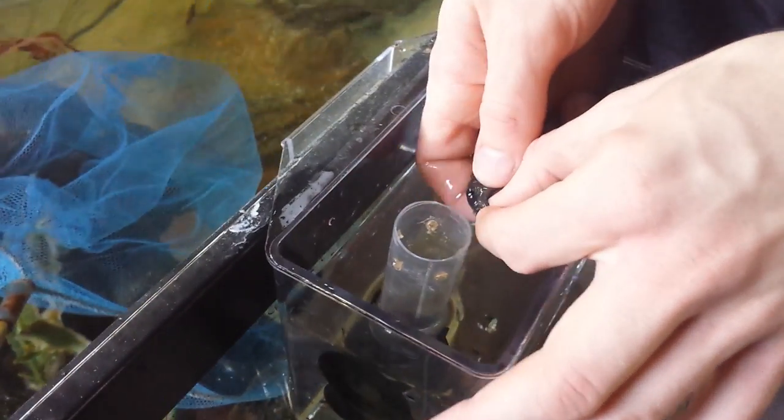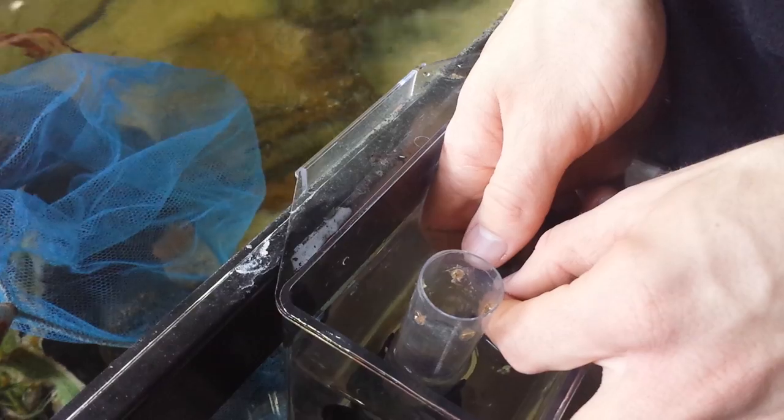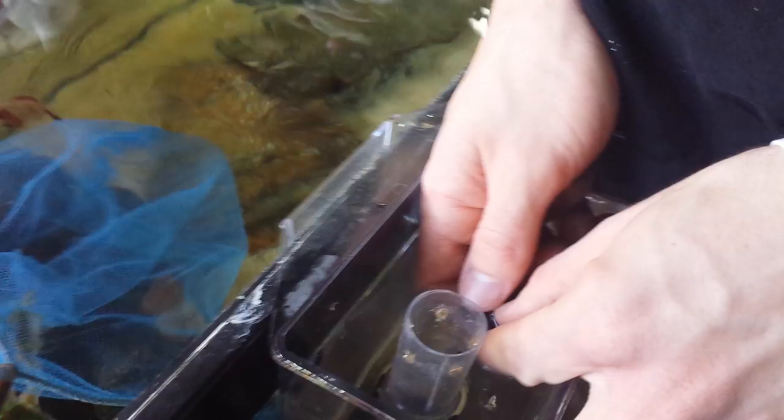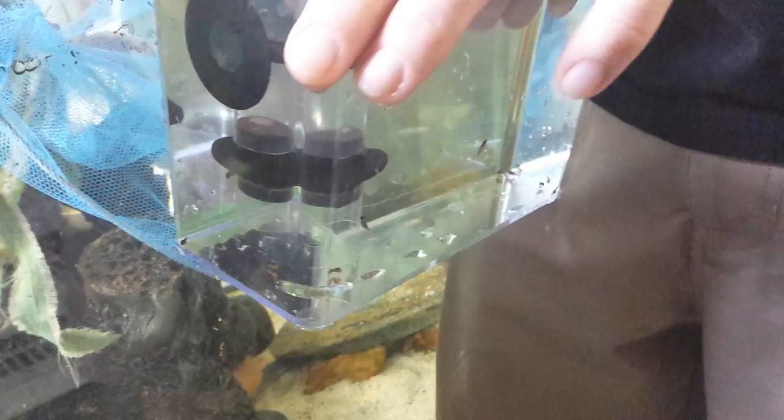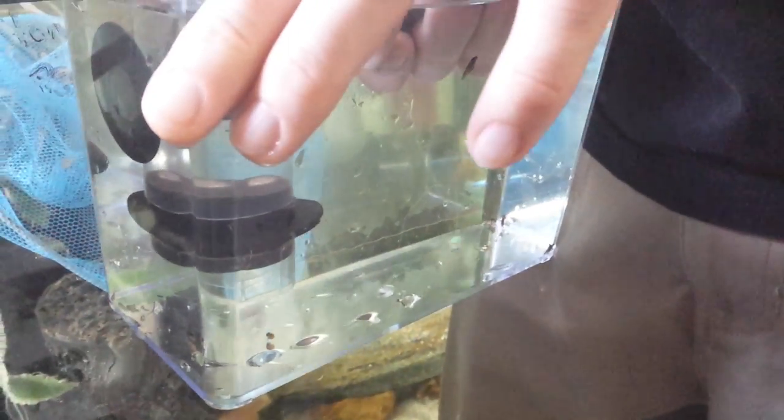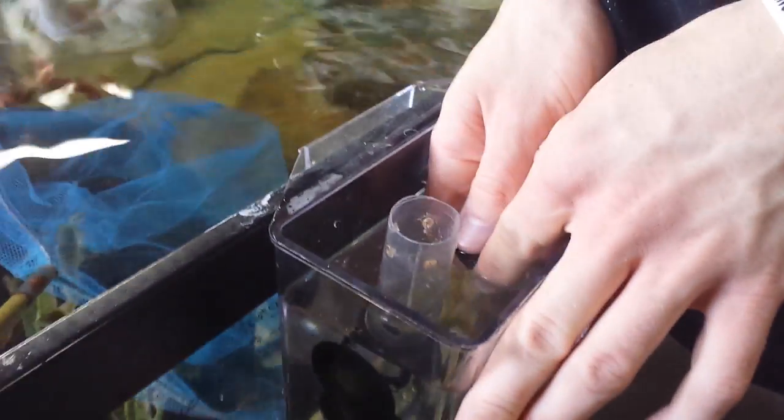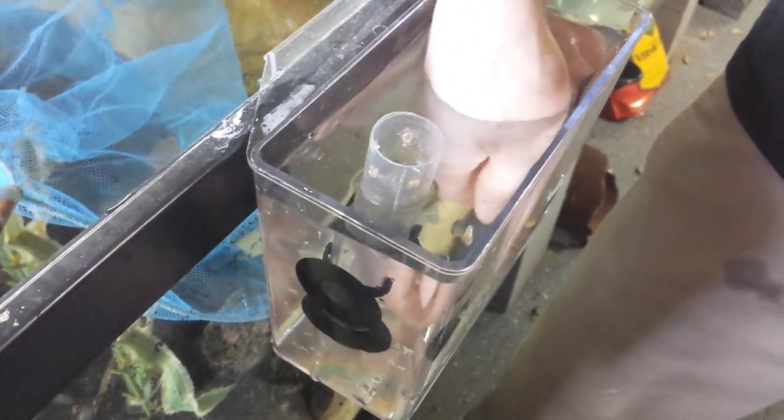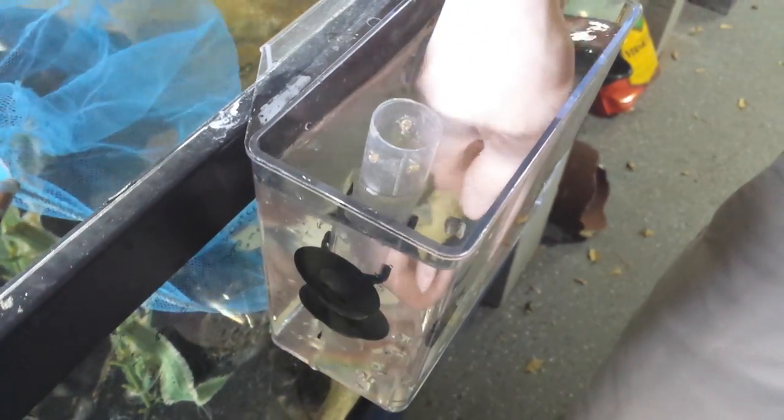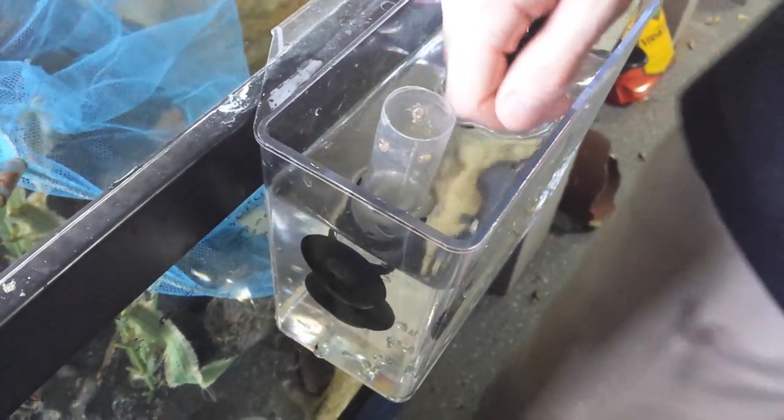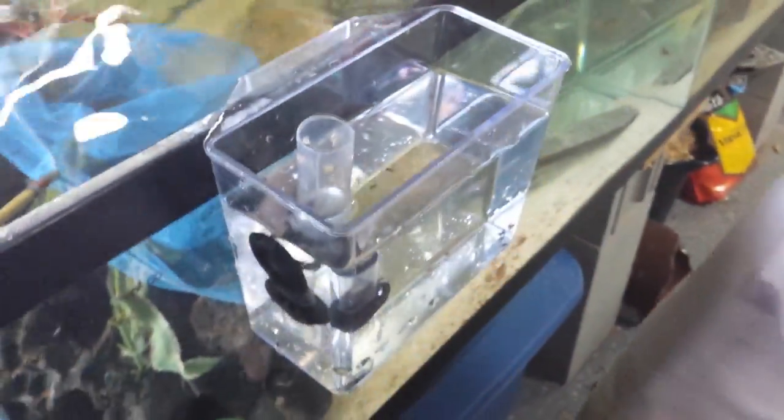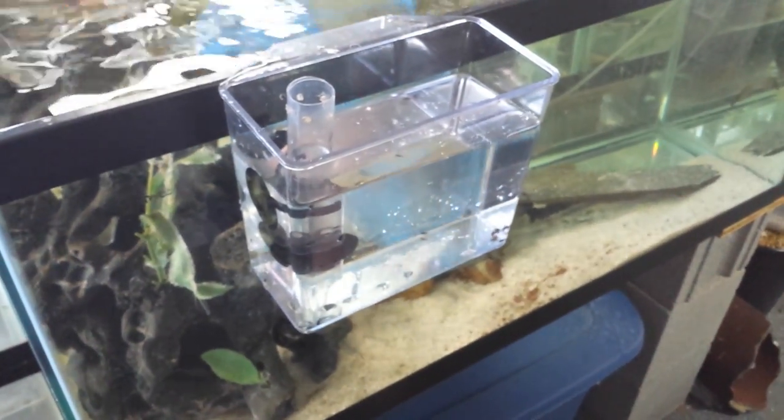Now you want to be really careful when you're doing this cause you can actually break her jaw by pulling down too hard. So you just want to be real easy with it. Sometimes if you squeeze their gills a little bit it'll flush the fry right out of the mouth. She might have a couple left in there but we're not going to stress her out too bad. So what I'm going to do is I'm going to go ahead and let her go back inside the tank.